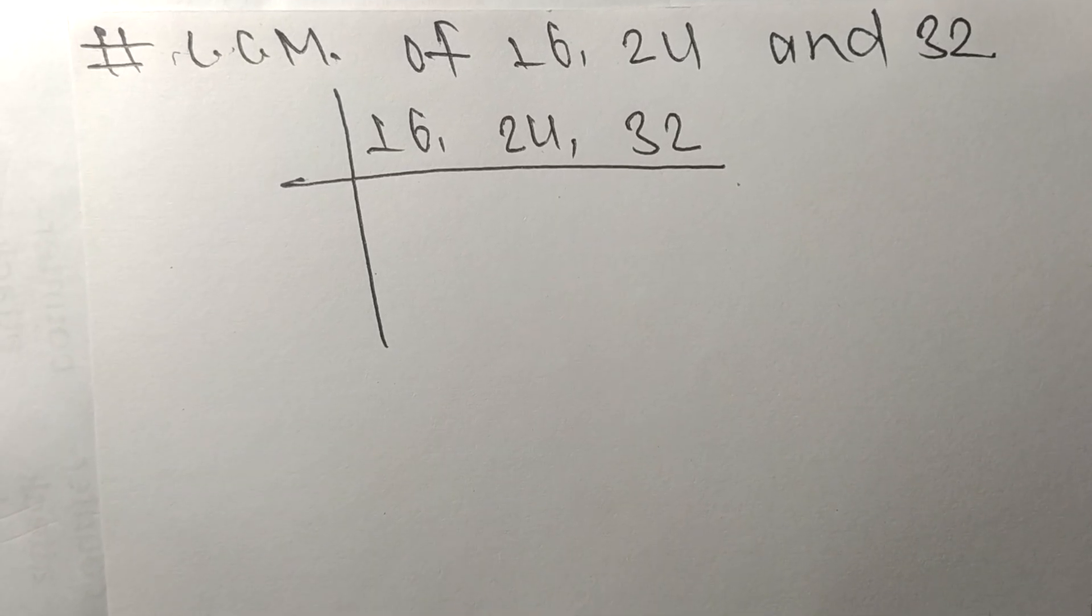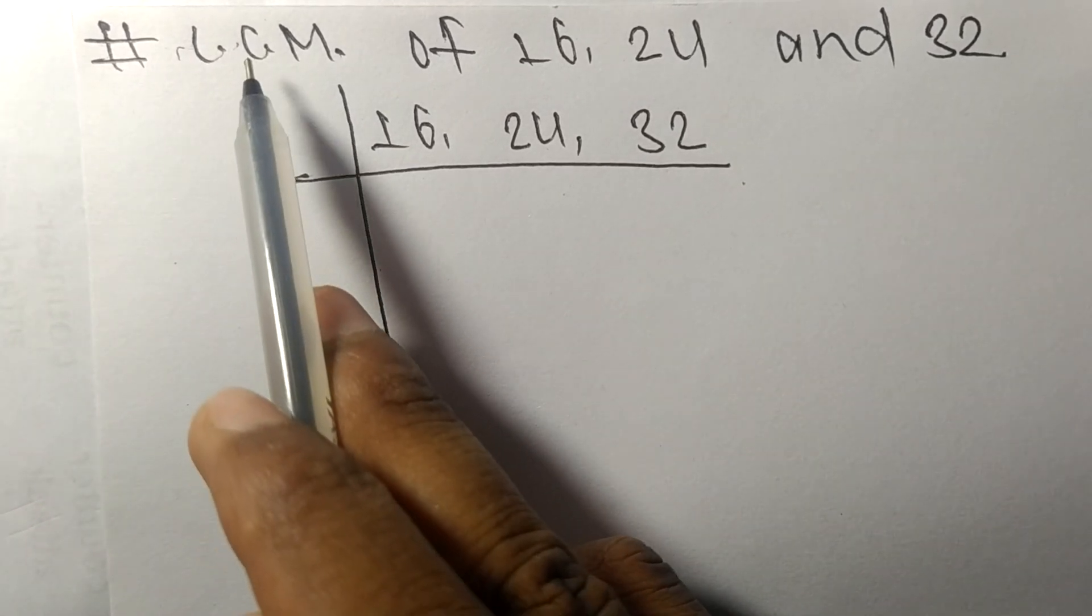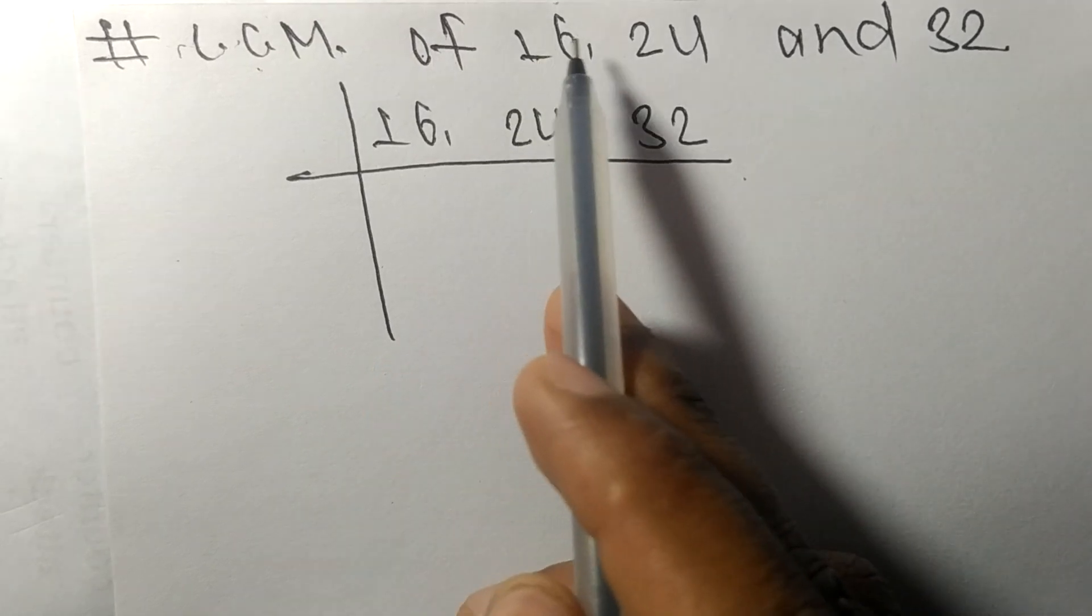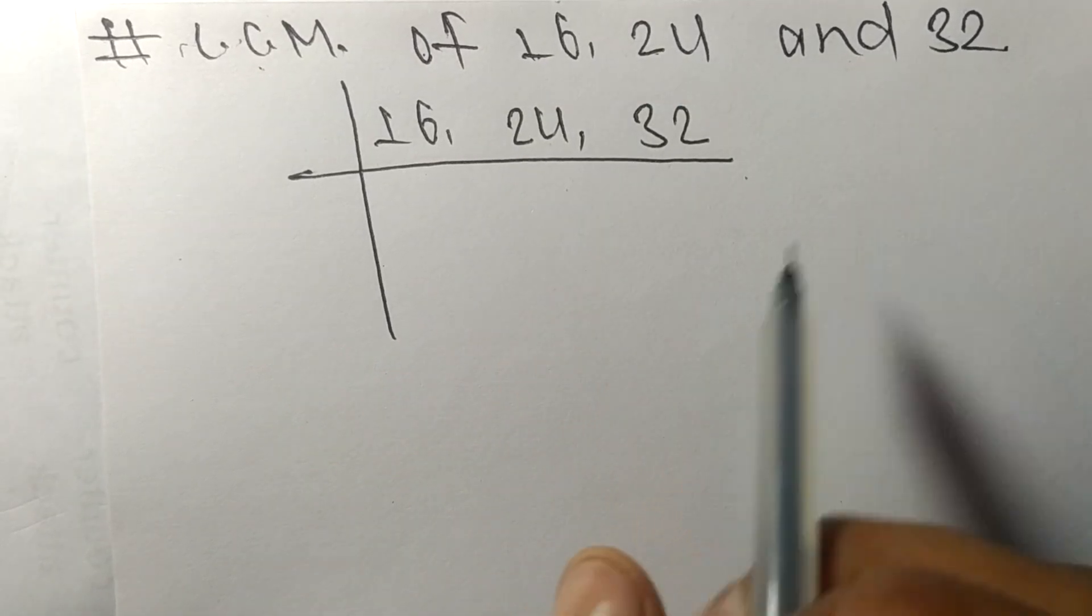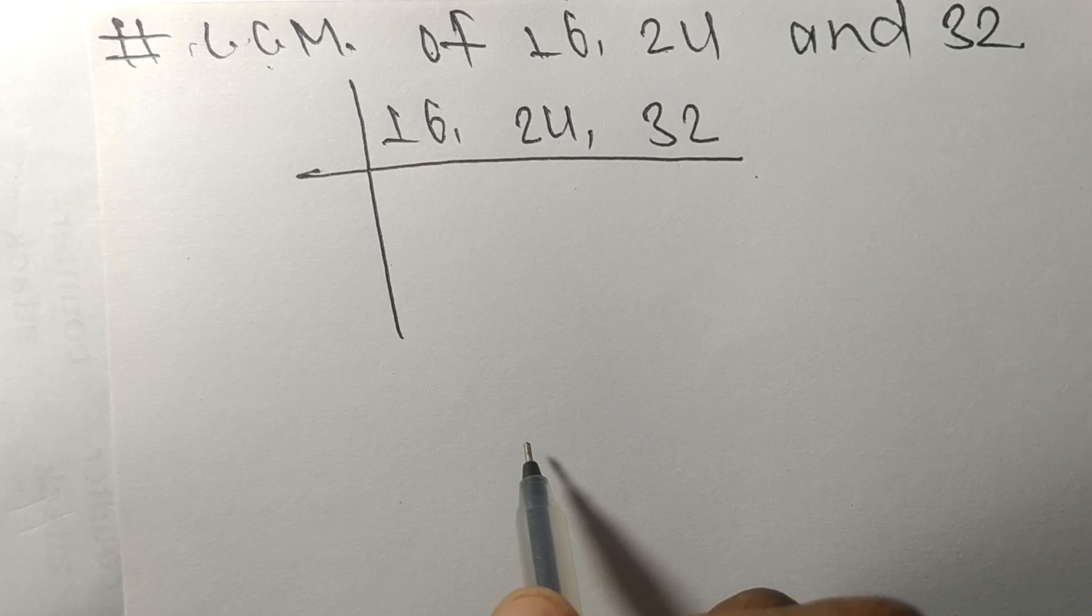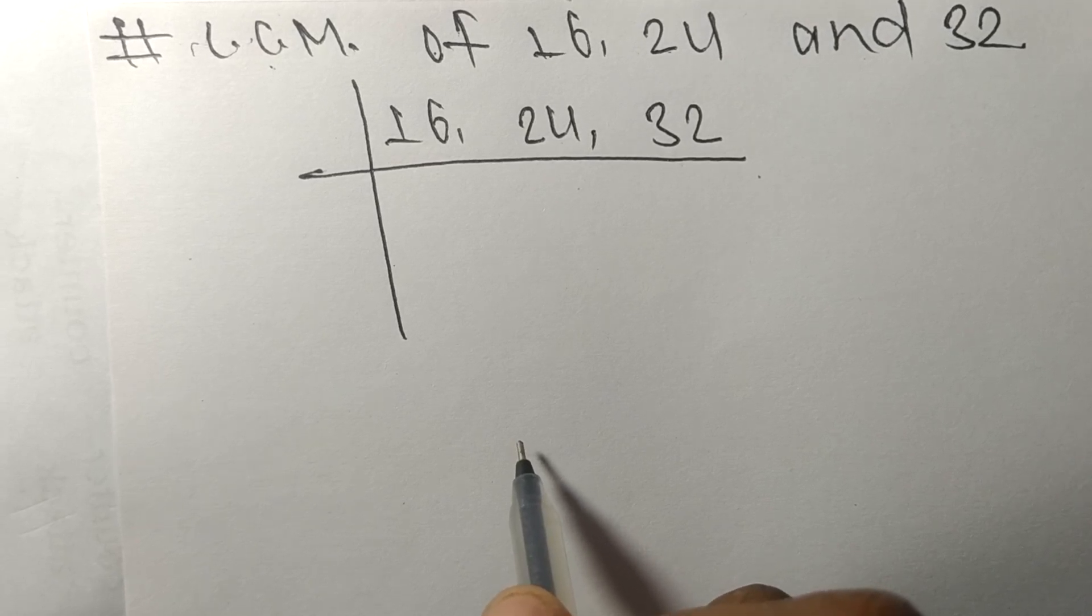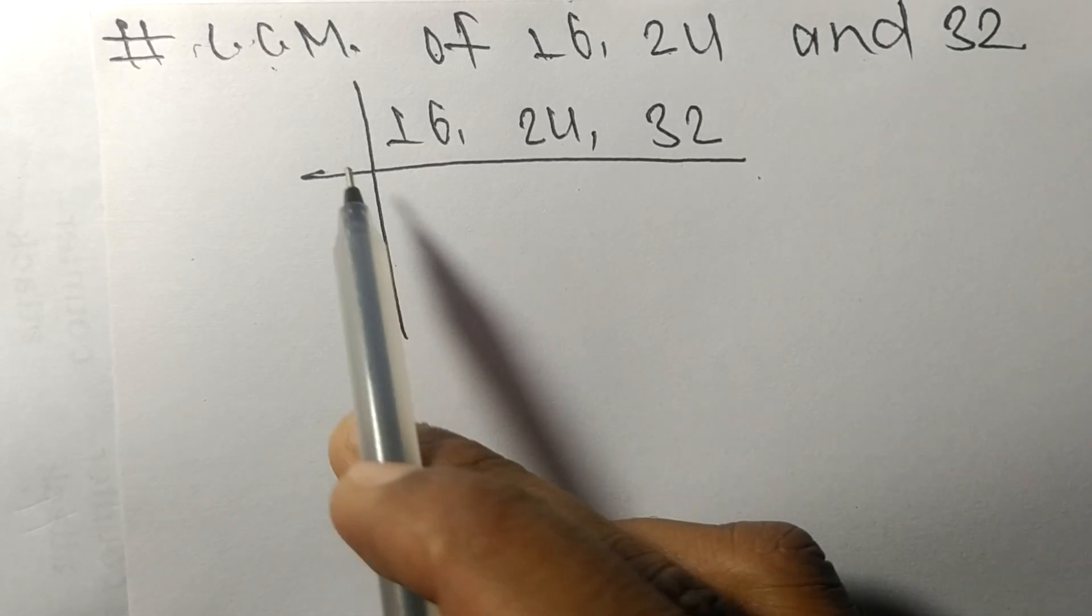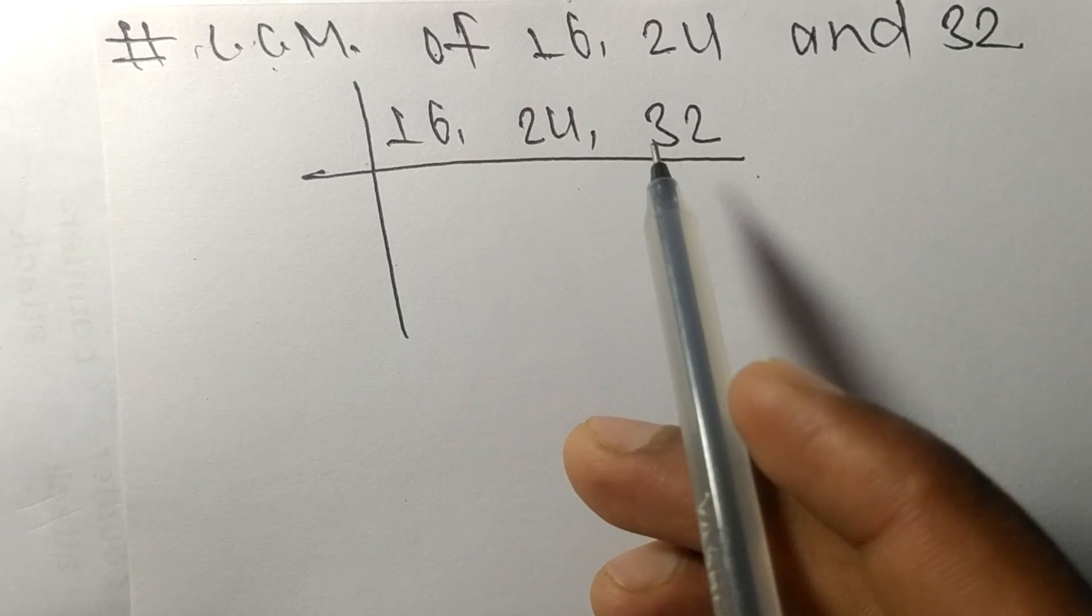Today in this video, we shall learn to find the LCM of 16, 24, and 32. To find LCM, we have to choose the lowest number that can exactly divide at least any two of these numbers.